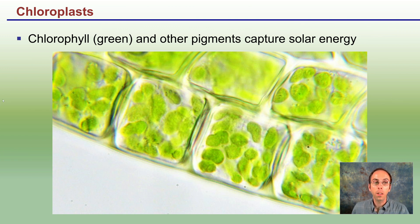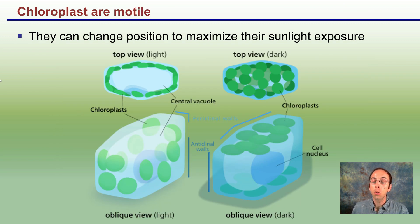Chloroplasts contain chlorophyll — those green pigments that allow them to capture solar energy. You can even see them with a light microscope; they're very well defined in the cell. What's unique about chloroplasts is that they are mobile; they can actually change position to maximize their ability to capture sunlight.